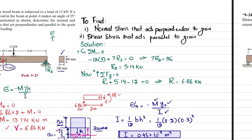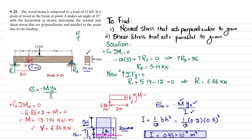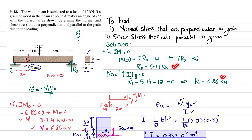I will also explain here. For normal stress and shear stress at point A, first we find the reaction forces R1 and R2 by removing the supports and using equations of equilibrium. Once we find R1 and R2, we cut the beam at a distance of 2 meters from one side in order to find the normal stress, bending stress, and shear stress.